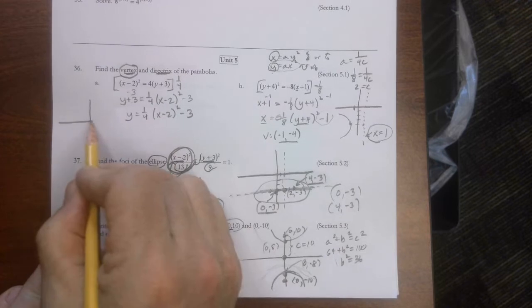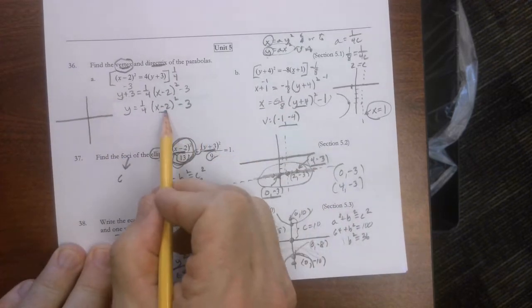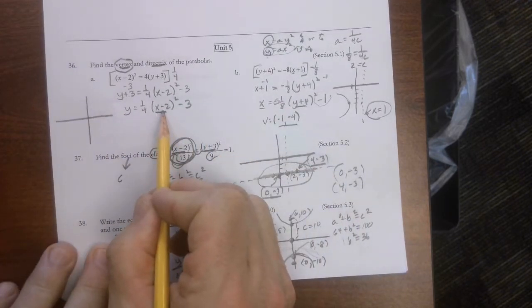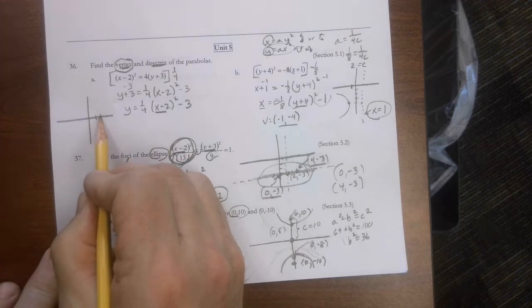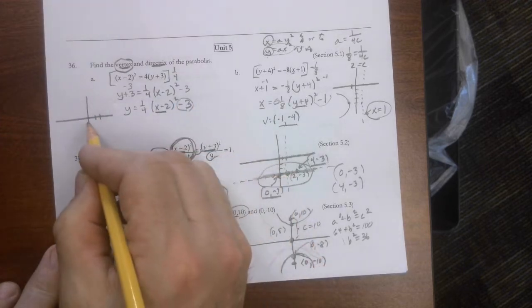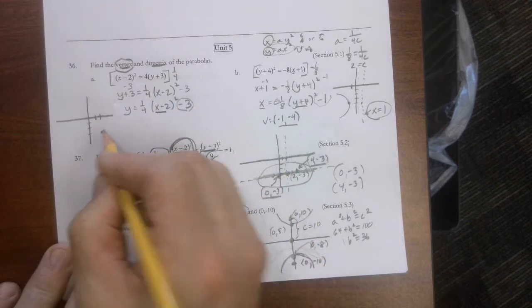And so we get y equals 1/4 x minus 2 squared minus 3. So we got to draw a little picture. And that would be perfect. Where's our vertex? Well, that sends it to the right 2. Where does this send it? Down 3. So there's our vertex. 2, negative 3.